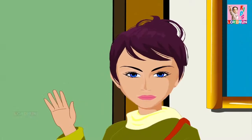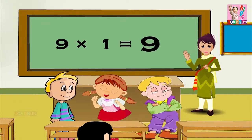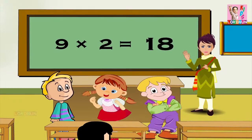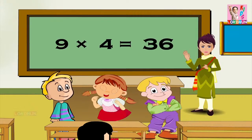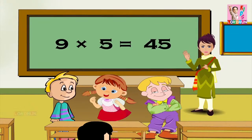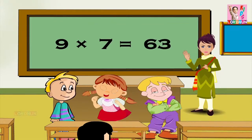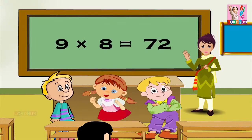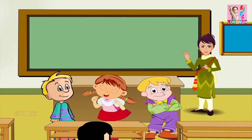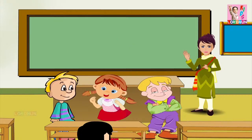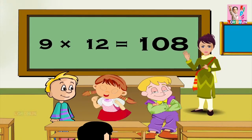Your turn. Nine ones are nine, nine twos are eighteen, nine threes are twenty-seven, nine fours are thirty-six, nine fives are forty-five, nine sixes are fifty-four, nine sevens are sixty-three, nine eights are seventy-two, nine nines are eighty-one, nine tens are ninety, nine elevens are ninety-nine, and nine twelves are one hundred and eight.